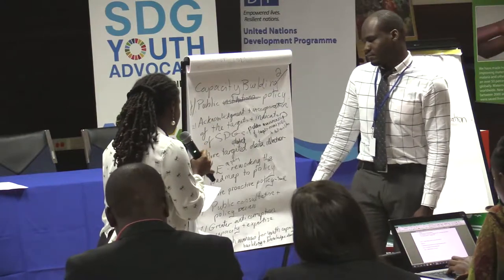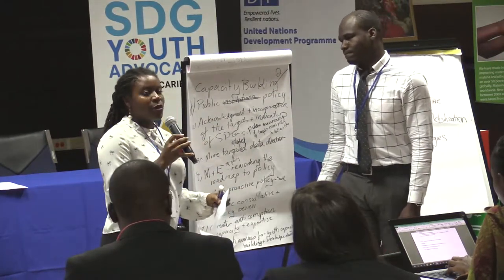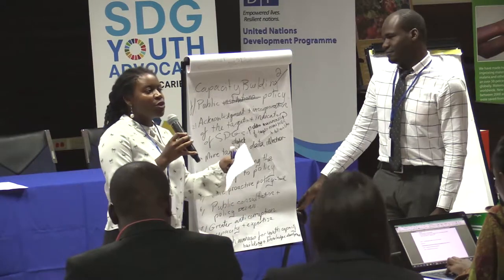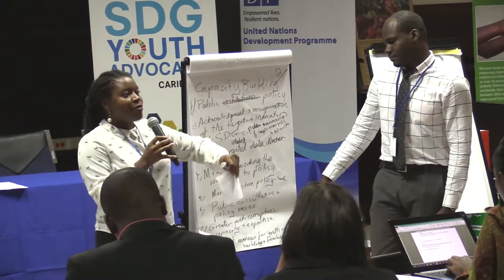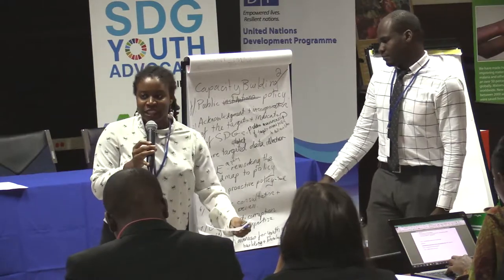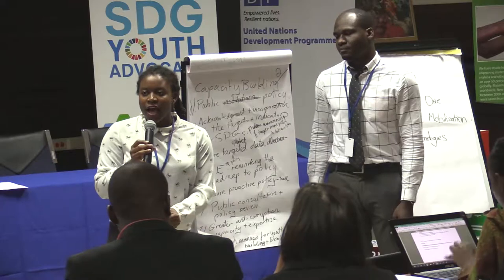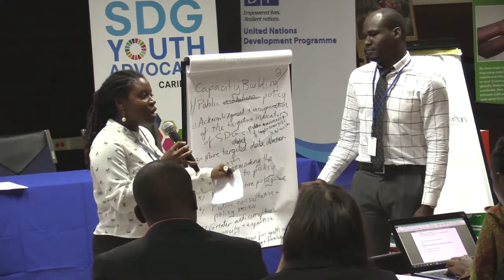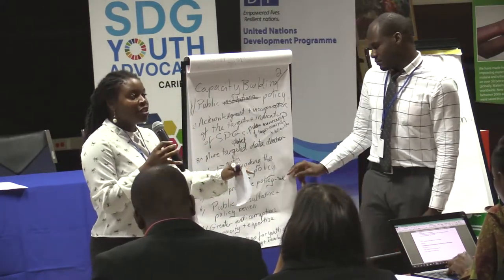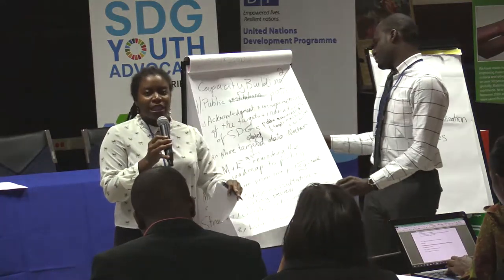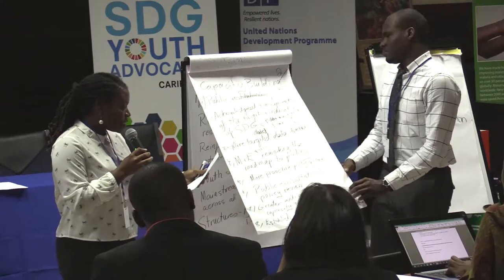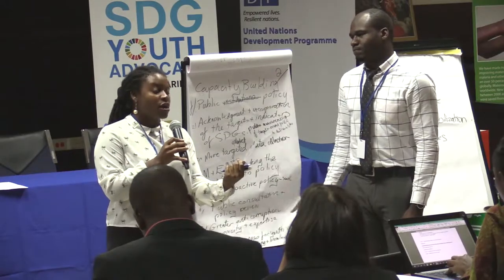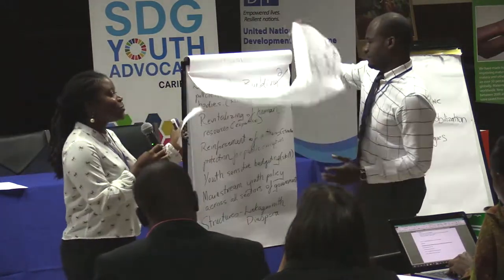On policy: we know the 2030 Agenda exists in Jamaica, for example, but we don't know to what extent it's actually being implemented across the Caribbean. Sensitization of policies is needed, but we also need to give these policies teeth. Many policies in Jamaica may be outdated in terms of enforcement mechanisms, and in developing policy there needs to be more consultation with youth.